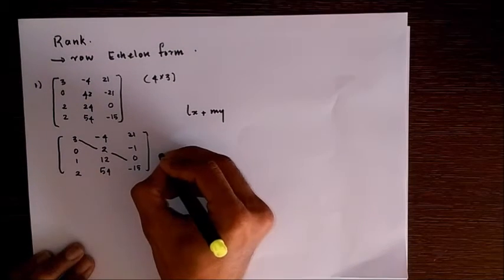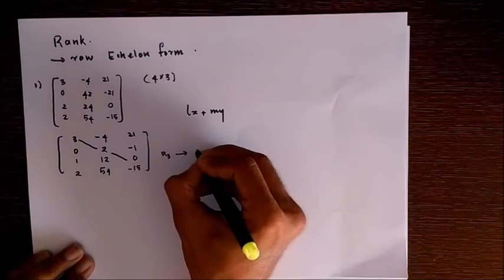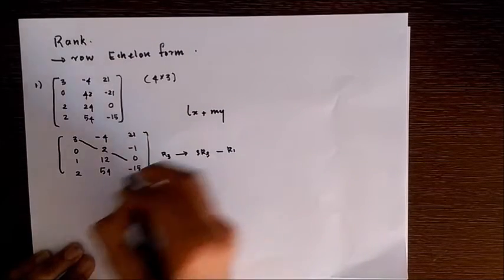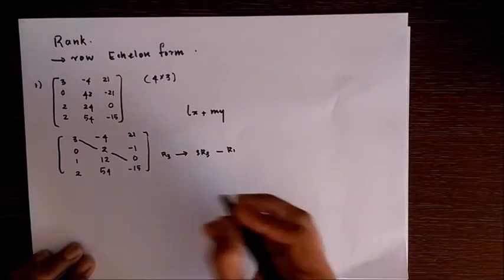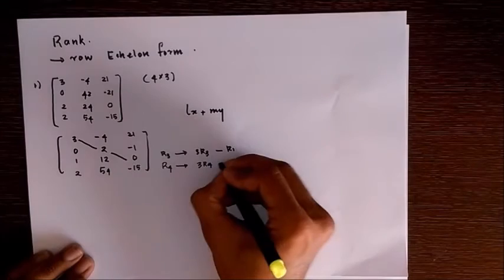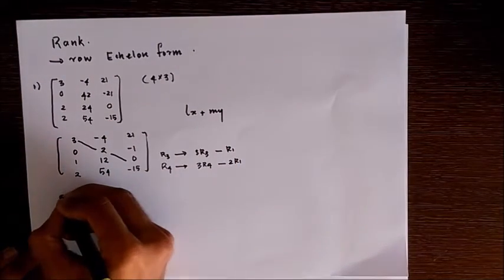The third row: r3 is transformed as 3r3 - r1, so that we get 3 times 1, which is 3, minus 3 equals 0. r4 in a similar way is 3r4 - 2r1. These transformations...